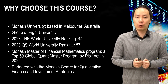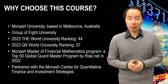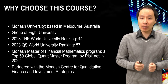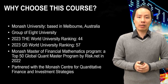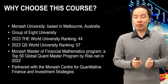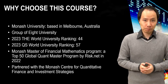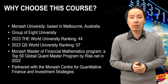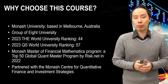So why choose this course here at Monash University? Well, Monash University is one of the Group of Eight universities in Australia and is perhaps the biggest in terms of student numbers. Over the past few years, Monash has steadily climbed in global university rankings and is currently ranked at about top 50. Our Master of Financial Mathematics course is also ranked by risk.net as one of the top programs in the world.